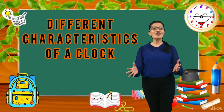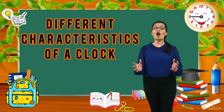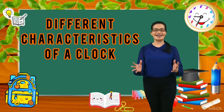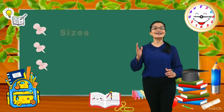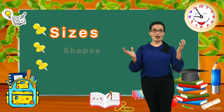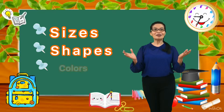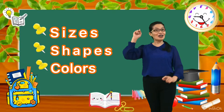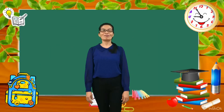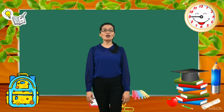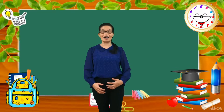Today you're going to learn about the different characteristics of a clock. So these are the sizes, the shapes, and the different colors of a watch. So these are the characteristics of a clock.